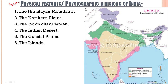Now in this chapter we are concerned about the physical features or physiographic divisions of India. Let us quickly go through them. We see the Himalayan mountains — if I take you to this map, the physical features shown in purple color are the Himalayas. Then we have the northern plains, represented in green color.